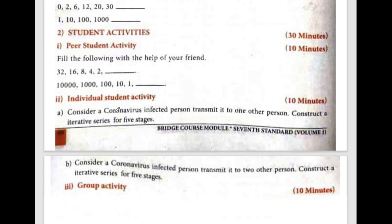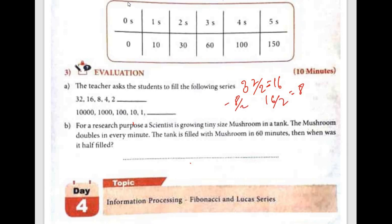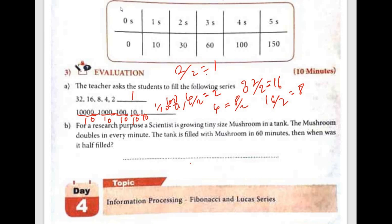Day 3 student activity. The teacher asks the student to fill the following series: 32, 16, 8, 4, 2. So 32 divided by 2 is 16, 16 by 2 is 8, 8 by 2 is 4, 4 by 2 is 2, and 2 divided by 2 is 1. Next: 100 divided by 10 is 10, 10 divided by 10 is 1, and 1 divided by 10 is 1/10 or 0.1. So 1 is the answer.